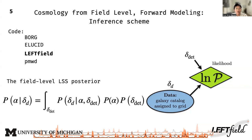A field-level Bayesian inference typically must: (a) produce a prediction delta_d for the observed galaxy data, and (b) marginalize over delta_d to achieve constraints on the cosmological parameters alpha. But if you ever look at any survey or simulation, you would immediately ask: do we have a good prior on delta_d? And the short answer is no.